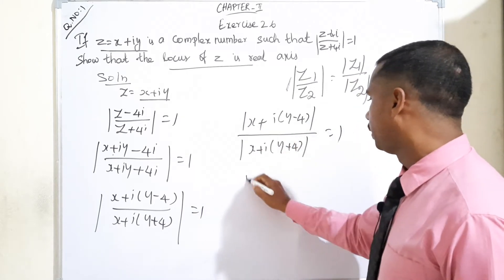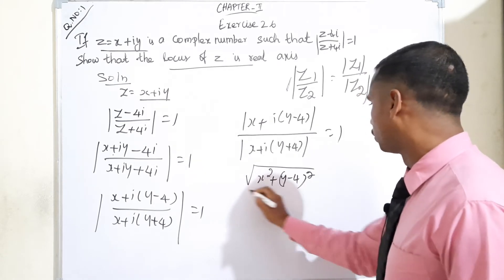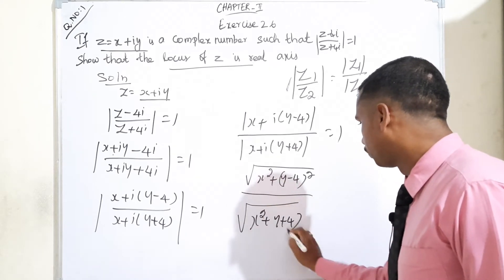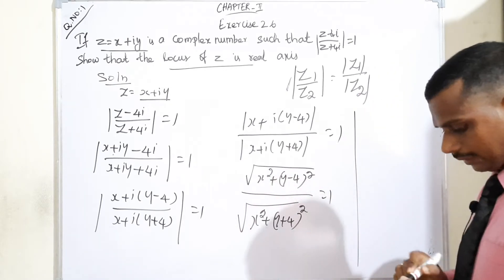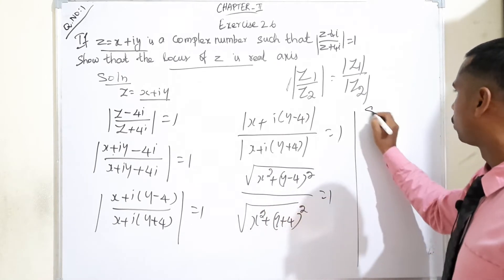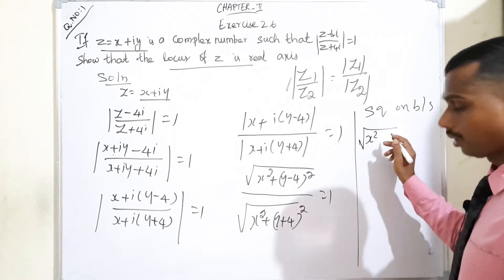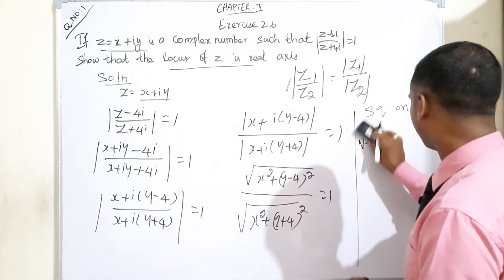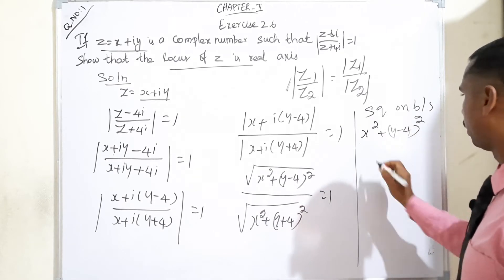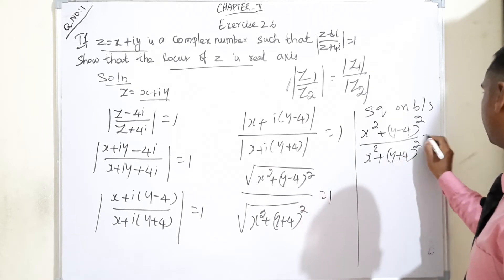If we remove the modulus, each term gets squared. So: x squared plus (y minus 4) whole squared divided by x squared plus (y plus 4) whole squared is equal to 1. Squaring both sides, the square root and square cancel, giving the same expression equal to 1.